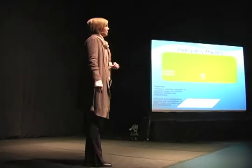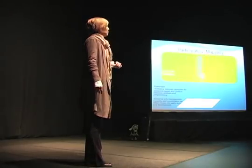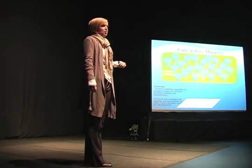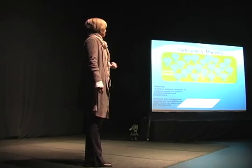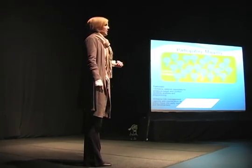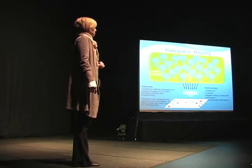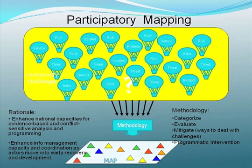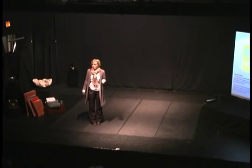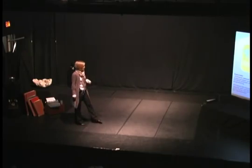On top of that, we rolled out a participatory mapping cycle at state and community level on community perceptions of threats, risks, and challenges in those communities when looking towards recovery and development. The methodology was to categorise the overwhelming risks, challenges, actors, threats, and incidents that were going on, map them geographically, give them a geo-reference, and then analyse and evaluate ways to respond to them.